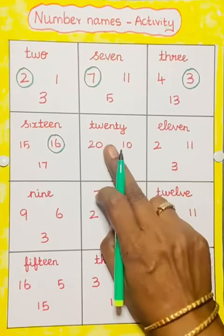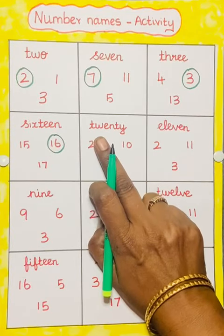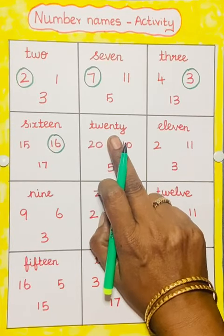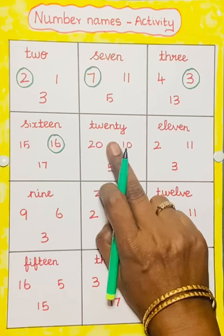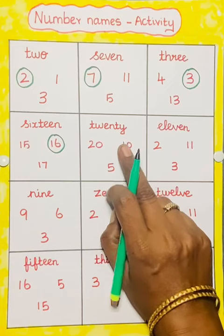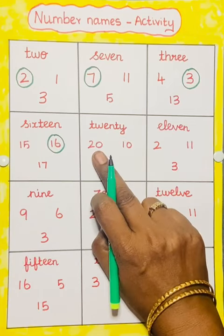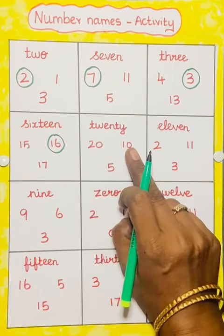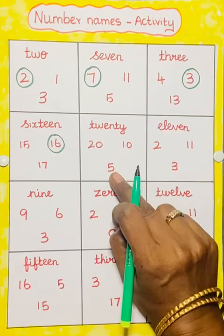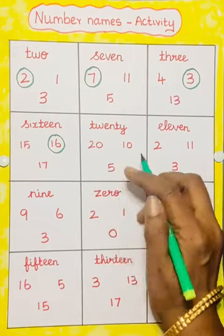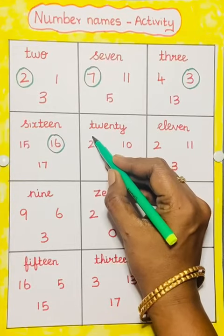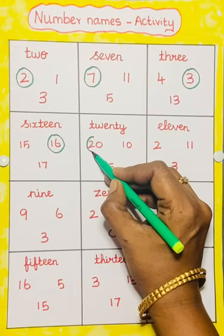Next one: 20. T-W-E-N-T-Y. 20. See, this is 20. 10. 5. So we have to circle 20.